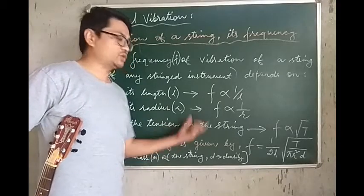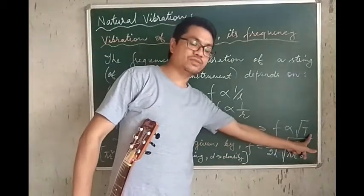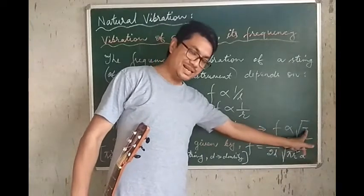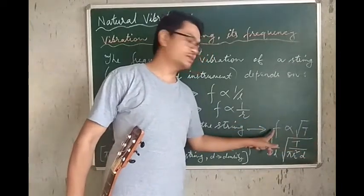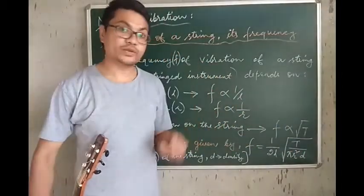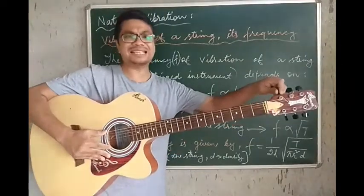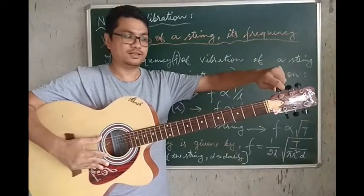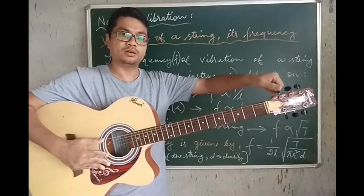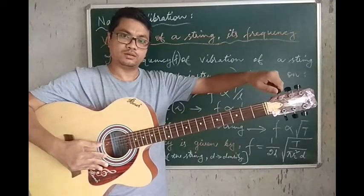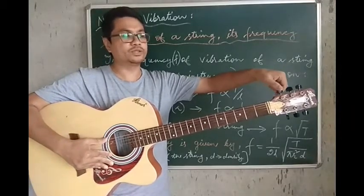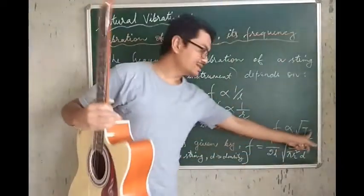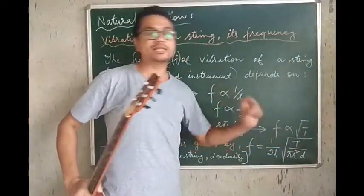Also, the frequency of vibration of the string is dependent on T — the tension of the string. Frequency is proportional to the square root of the tension. More is the tension of the string, higher is the frequency; lesser is the tension, lesser is the frequency. Using the tuning keys on the guitar to loosen the string, we can hear that as tension decreases, frequency decreases, and as tension increases, frequency increases.